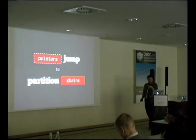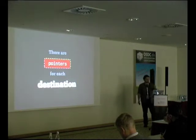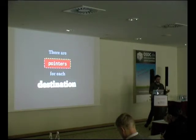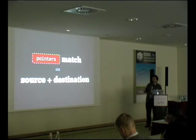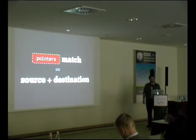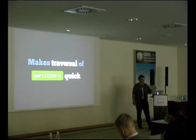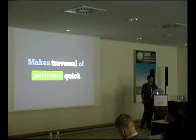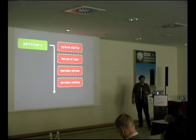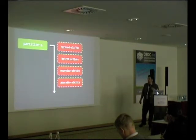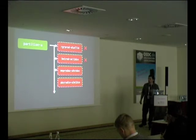These pointers jump to partition chains, matching on source and destination — we don't match on protocol, port, or connection state. The idea is to make traversal of partition_A as quick and simple as possible so the kernel doesn't have to do much work. The packet will try to match pointer rules and, if matched, jump into that specific customer chain.